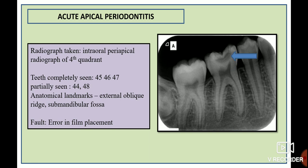In the crown portion, there is an ill-defined radiolucency in the occlusal aspect of 46, involving enamel and dentin and approaching the pulp, which is suggestive of dental caries. In the root portion, there is widening of the periodontal ligament space seen in the apical one-third of the mesial root of 46. These features are suggestive of dental caries with acute apical periodontitis in relation to 46.